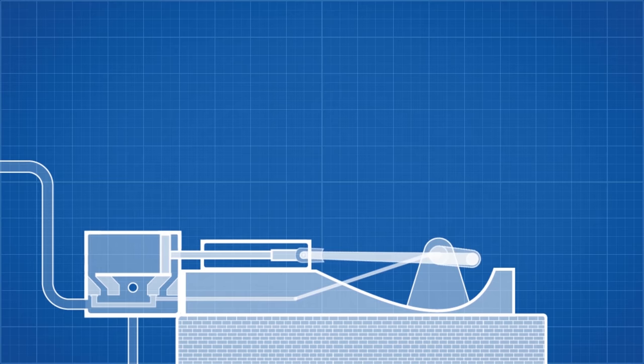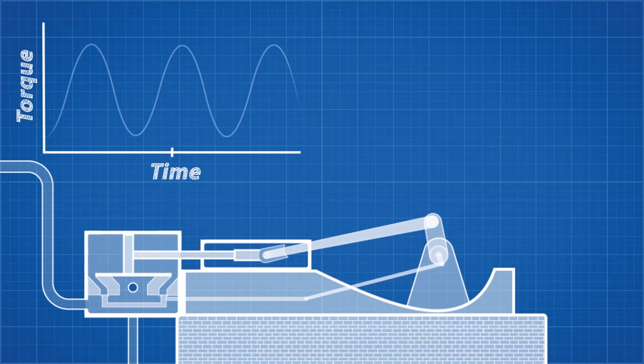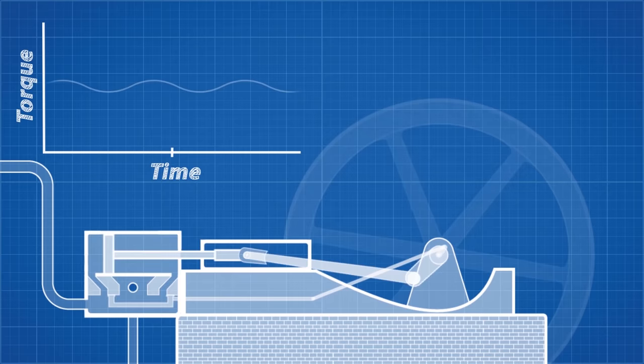But piston engines like this do not produce constant torque. They will pulsate in speed and torque during a single cycle, like this. This can cause vibrations and jerky movement. We can reduce this with the use of a flywheel, which stores rotational energy with inertia and evens the torque out. It's essentially a mechanical battery.